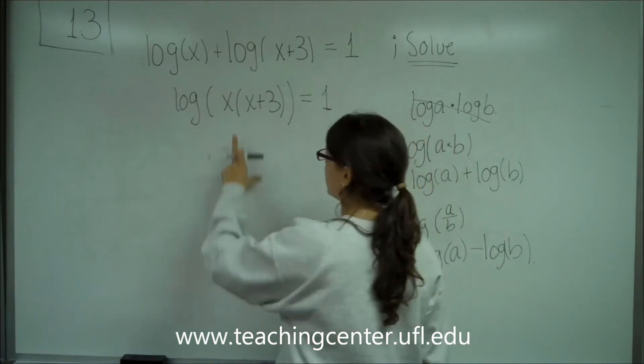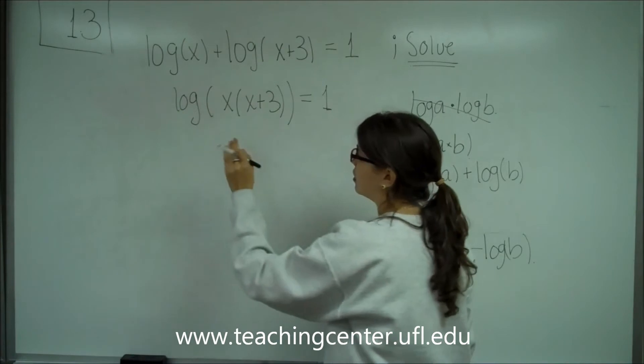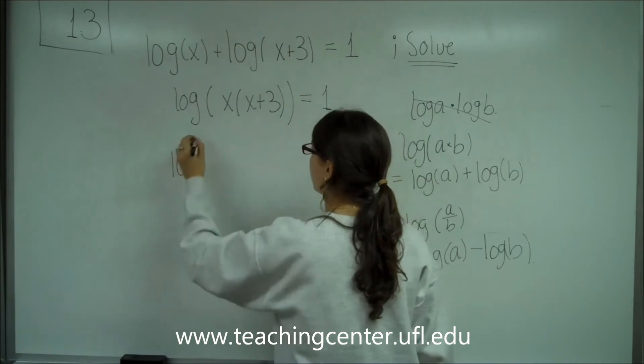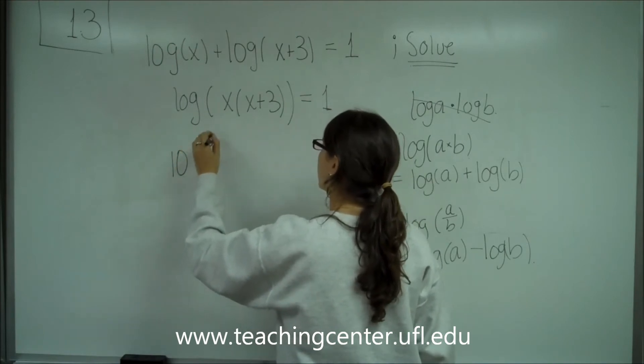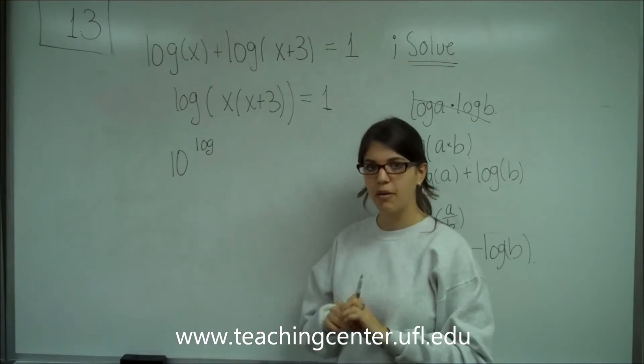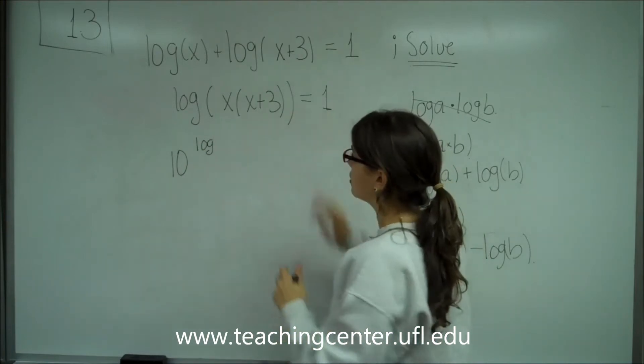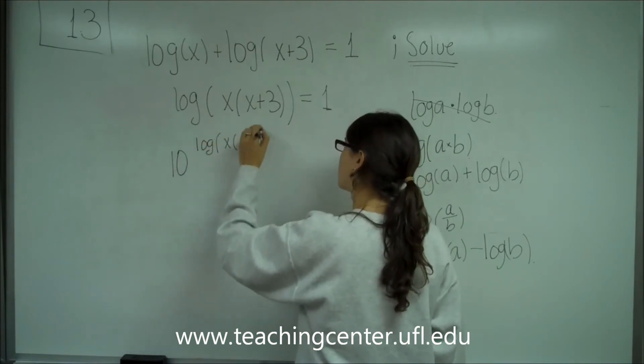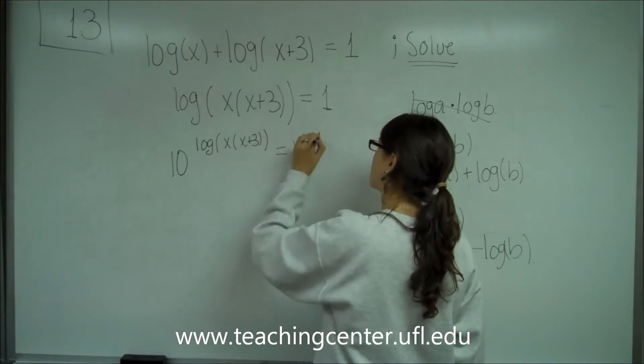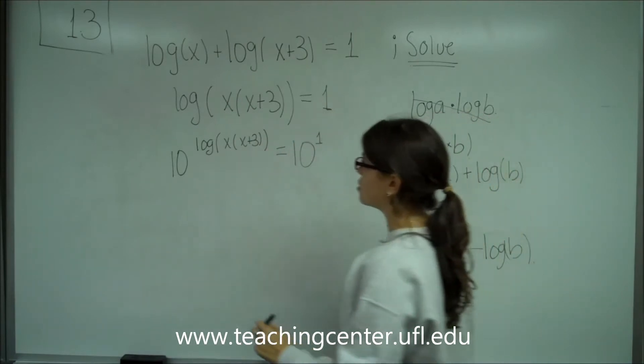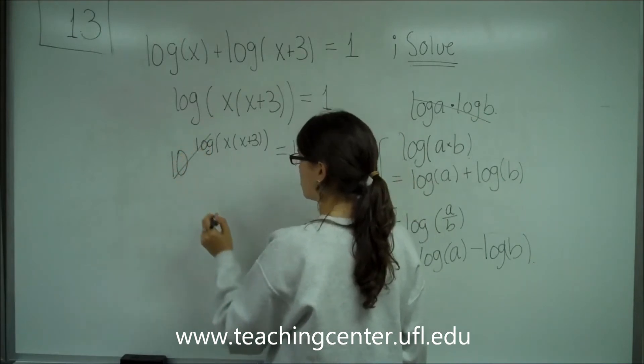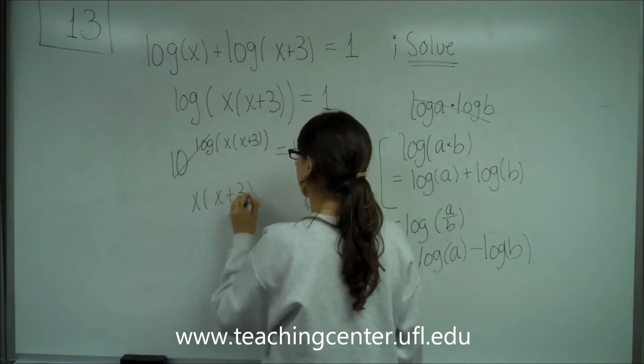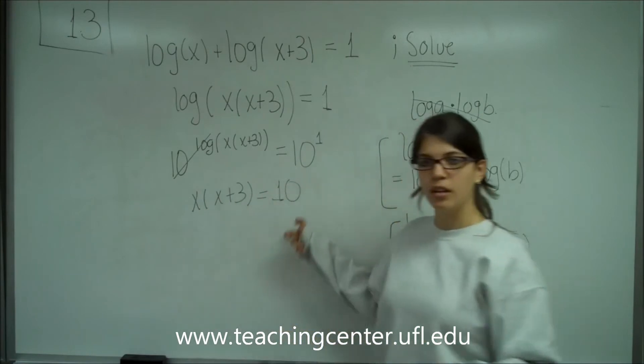And now we need to solve for x, so we need to get this log out of the way. So to do that, we're going to raise 10 to each side. So you have 10^(log(x(x+3))) = 10^1. And so that means that you're going to be able to cancel these two, the 10 and the log, to make x(x+3) equal to 10 to the first power, just 10.